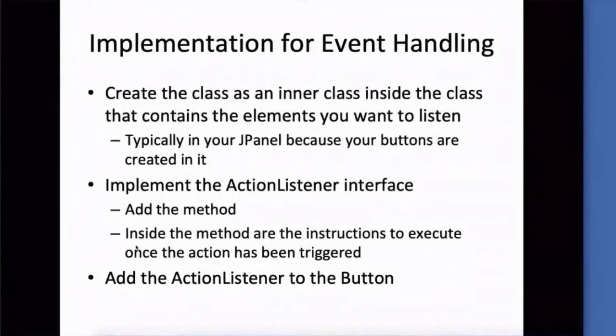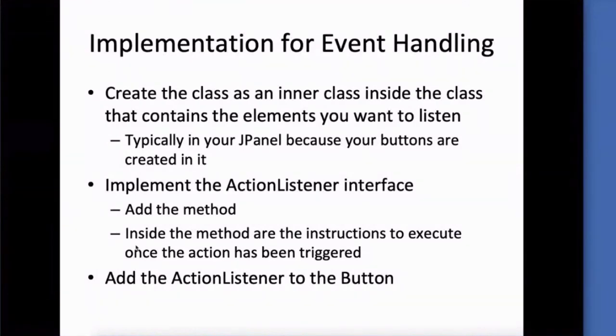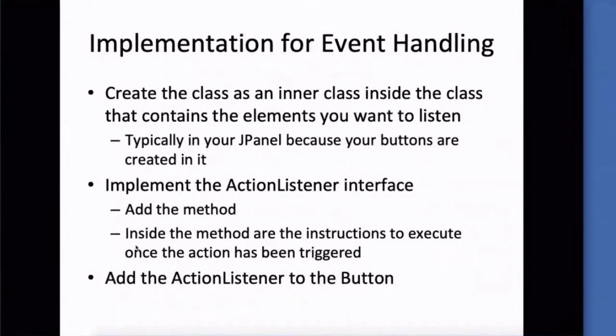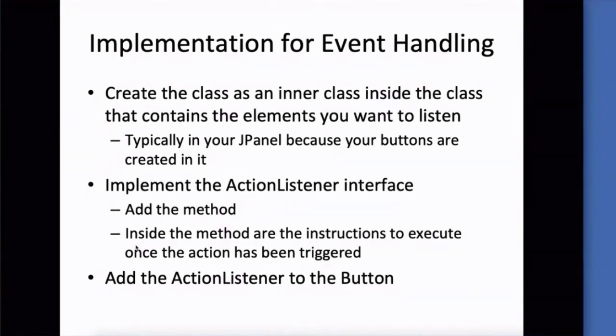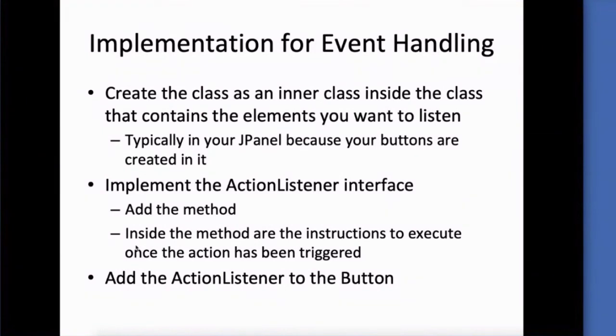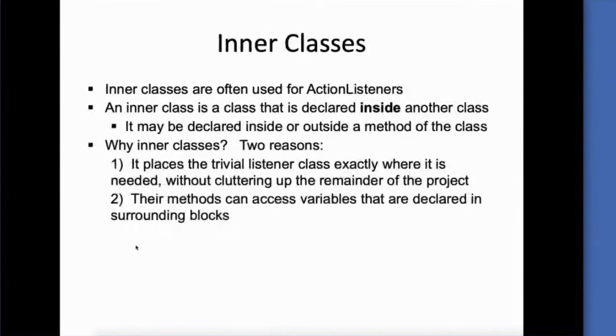So, for implementing event handlers, we create an inner class inside of the class that contains the elements that you want to listen. So, typically, this is going to be in our JPanel because our buttons are inside of our JPanel. That's where we declared and initialized them and added them to the panel. So, at the same time, we would create an inner class that implements the ActionListener interface. In order to use that interface, we have to use its method. By adding that method, we're going to put in the instructions of what's going to happen once that button has been clicked. And then, finally, we have to tell it, this ActionListener needs to listen on this button. So, we'll put that relationship in there.